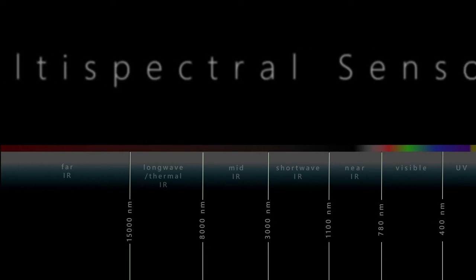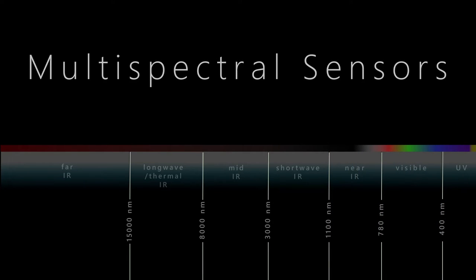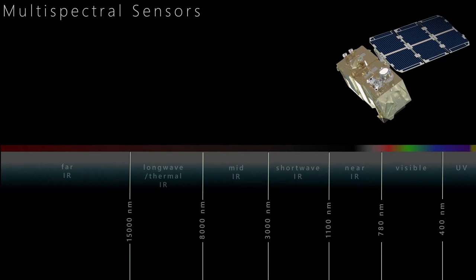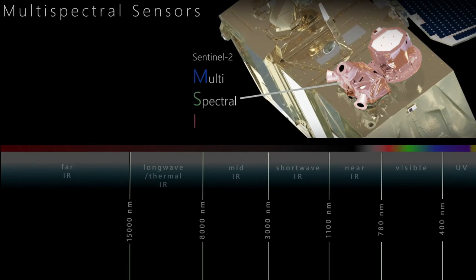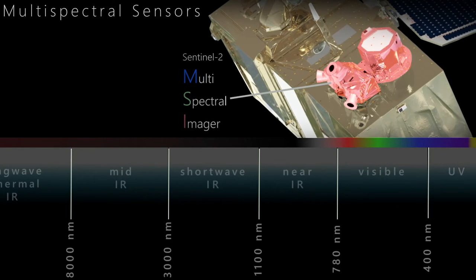Most Earth observation satellites are equipped with multispectral sensors. Modern multispectral sensors, such as the MSI on board of Sentinel-2, collect information in many channels, in this case 12.